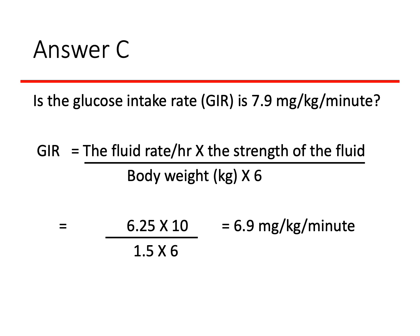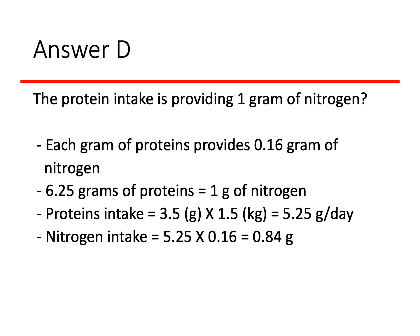Answer C asks if the glucose infusion rate (GIR) is 7.9 mg/kg/min. The formula is: GIR = (fluid rate per hour × strength of fluid) ÷ (body weight × 6). The baby receives 150 ml/day ÷ 24 hours = 6.25 ml/hour. So GIR = (6.25 × 10) ÷ (1.5 × 6) = 62.5 ÷ 9 = 6.9 mg/kg/min — not 7.9. So answer C is also not correct.